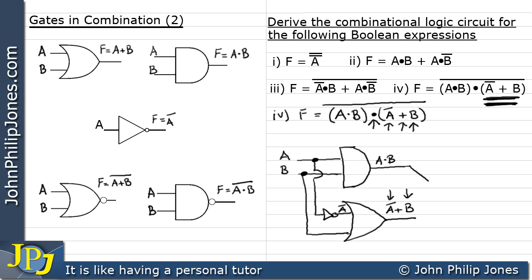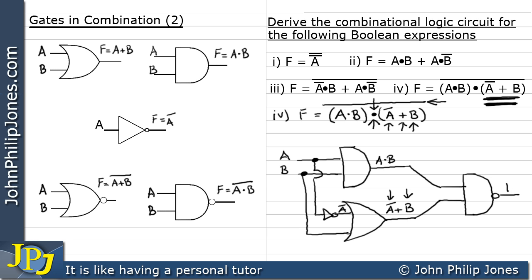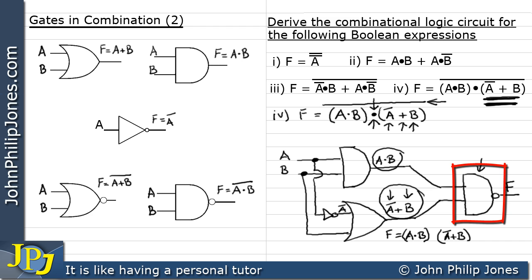Both outputs — A AND B, and NOT A OR B — go into a NAND gate, because we have an AND combined with a NOT bar across the top. The output is F. F equals NOT((A AND B) AND (NOT A OR B)). The NAND gate ANDs the two inputs and then NOTs the result, and we can see this matches the expression we were trying to produce. So we've produced a combinational logic circuit for that particular Boolean expression.